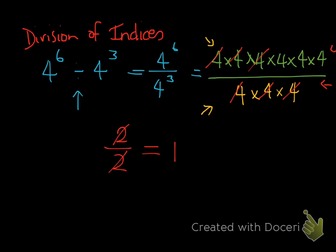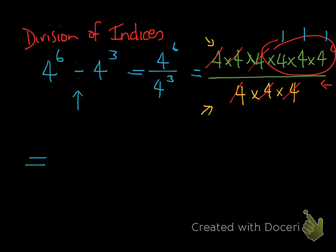We've now cancelled all of the 4s in our denominator with 3 fours in our numerator. They equal 1 so we don't have to worry about those. What we end up with is 3 fours on top. We know from previous slides that whenever we multiply a base number by itself a number of times, that count becomes our power. So we have 1, 2, 3 fours remaining — our new index when we simplify this quotient is 4 to the power of 3.